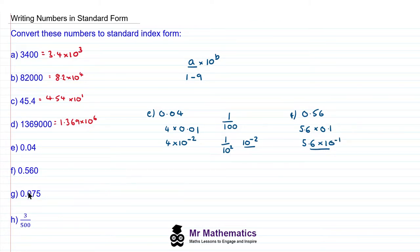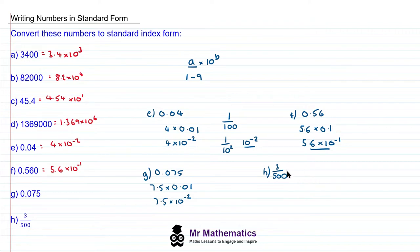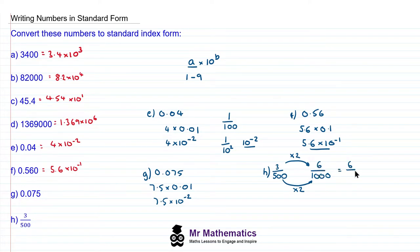Do you want to try and work out questions G and H in standard form? You can pause the video and resume it when you're ready. Welcome back. For question G, we write this as 7.5 times 0.01, and this becomes 7.5 times 10 to the power of negative 2. For question H, we have 3 over 500. This is trickier because 500 is not a power of 10. But we can write this fraction over 1,000 by multiplying the denominator by 2, and doing the same to the numerator: 3 times 2 is 6. So 6 over 1,000 is 6 over 10 to the 3, which we write as 6 times 10 to the power of negative 3.